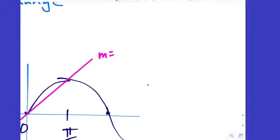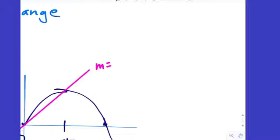To find it — how do we find the slope of a secant line or the average rate of change? We use the difference quotient. Remember the mnemonic? It's Dairy Queen. So it's the difference quotient.